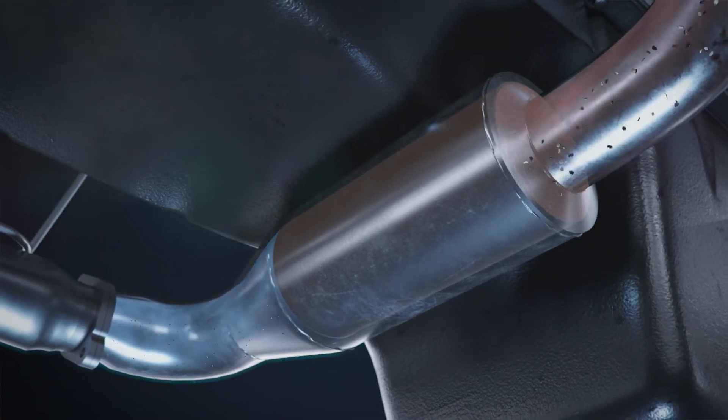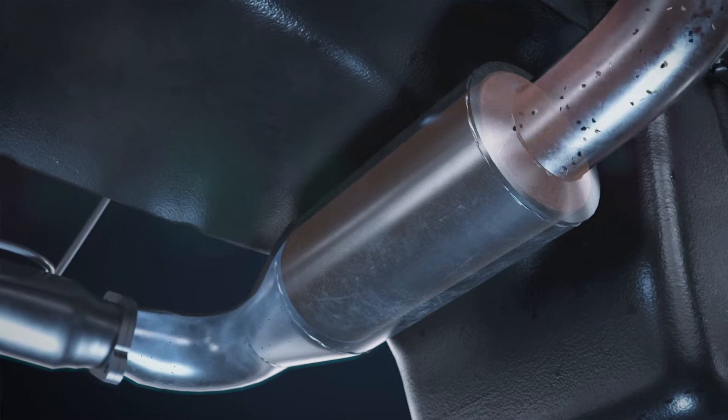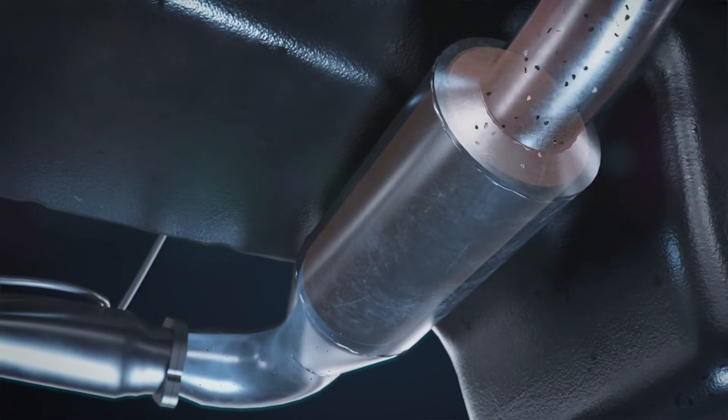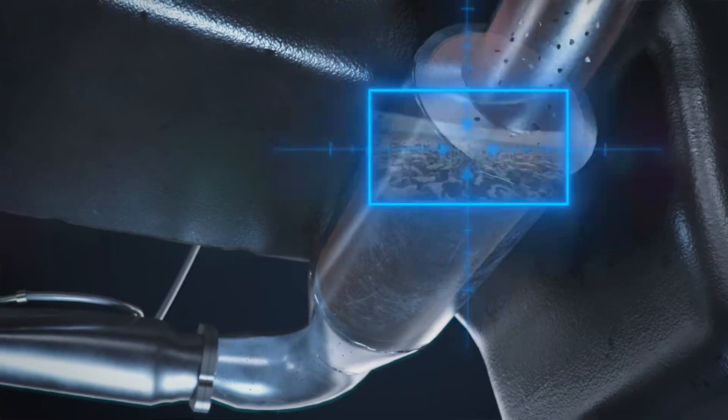A DPF reduces the size of the carbonaceous deposits that are created during combustion and emitted from the exhaust of diesel vehicles. Exhaust gas flows into a DPF and through a porous surface which is designed to block particles above a specific size from passing through.